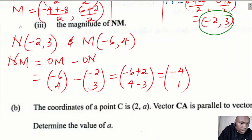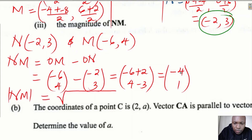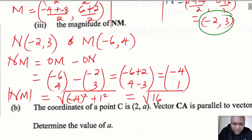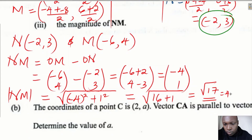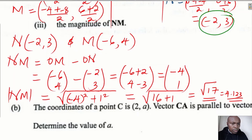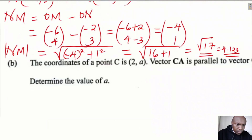To get the magnitude of vector NM, we take the square root of (-4)² + 1² = √(16 + 1) = √17 ≈ 4.123 units. That is the magnitude of NM — we first found vector NM, then computed its modulus.